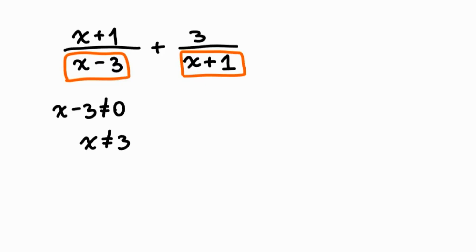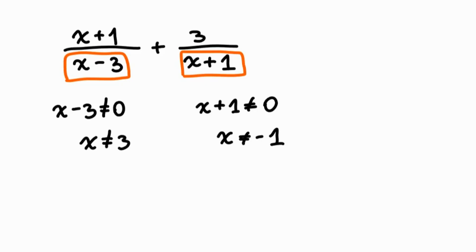For the other denominator, x plus 1: what value of x will make this denominator 0? Negative 1. We set x plus 1 cannot equal 0, therefore x cannot equal negative 1. When adding rational expressions, you need to find the common denominator — the product of the factors already in the denominators — but you must state the restrictions on each factor separately.